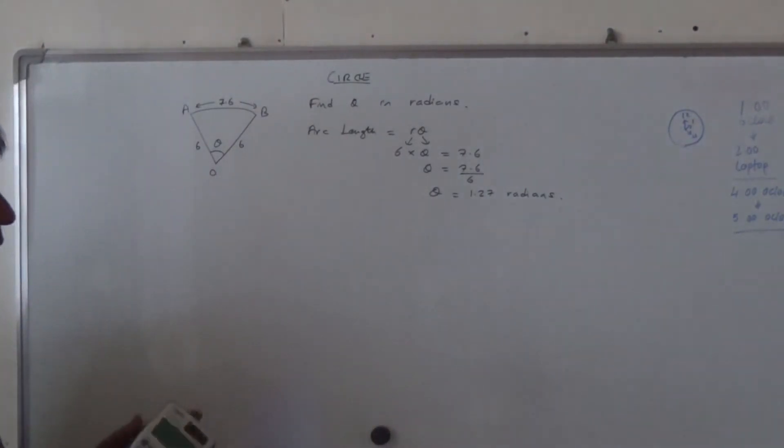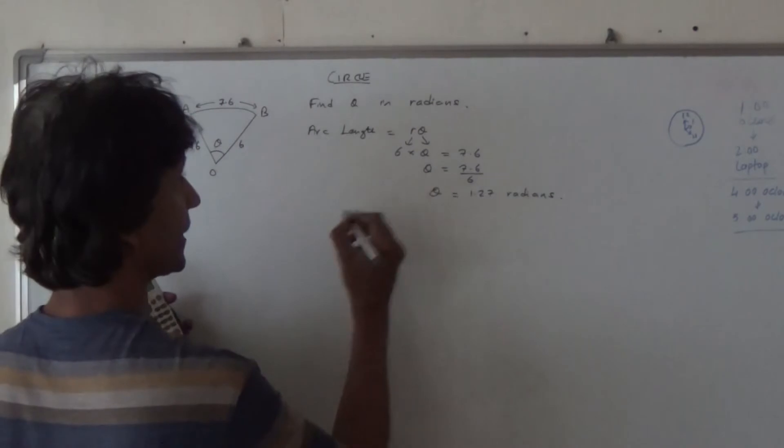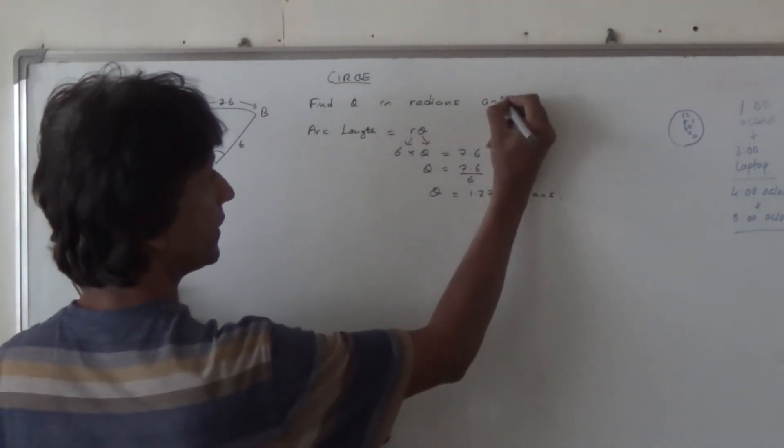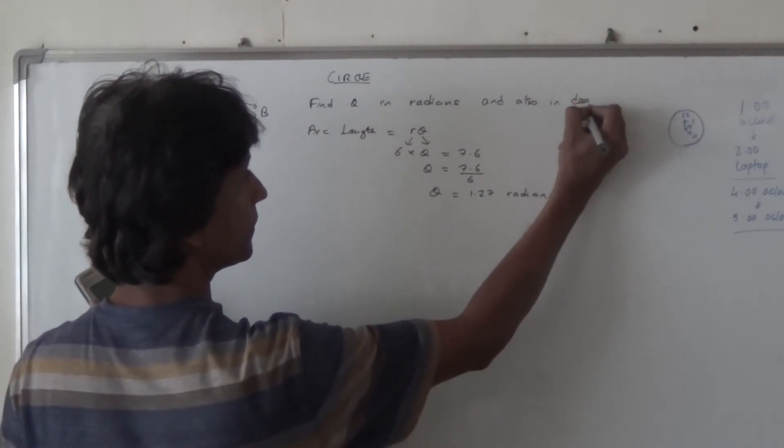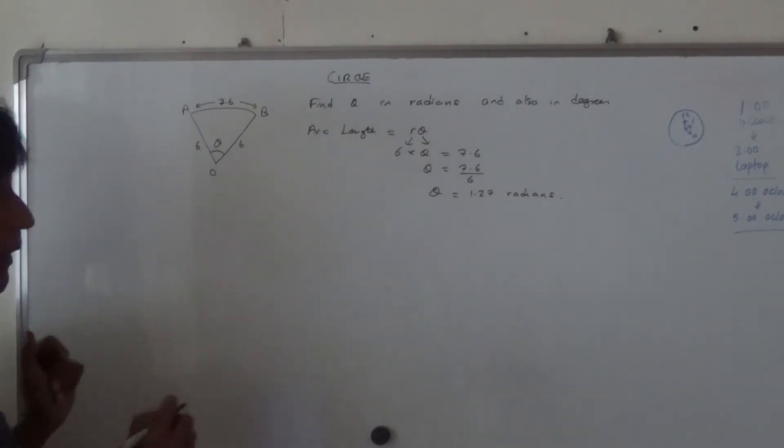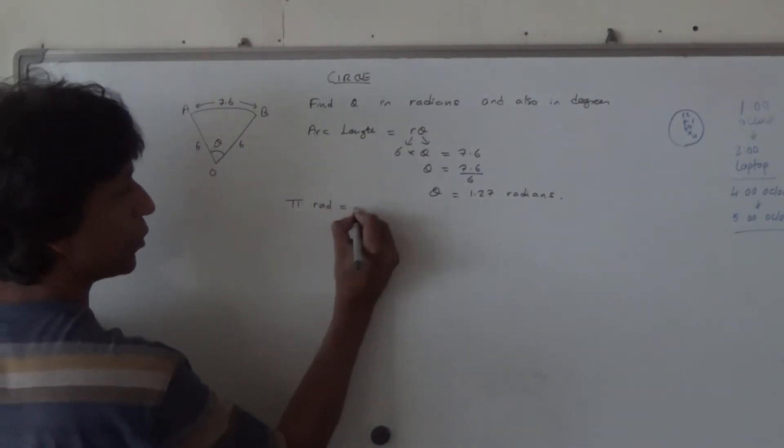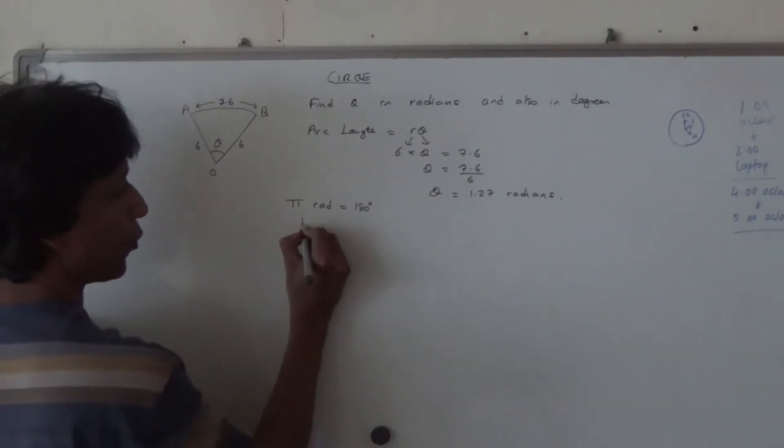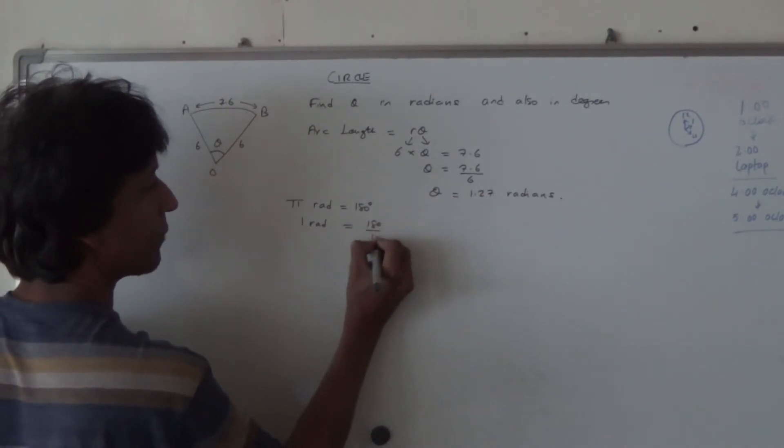And now suppose I tell you to convert theta into degrees. And then I say in radians and also in degrees. So to find that in degrees, not very difficult. You will remember I gave you the pi radian is always equal to 180 degrees. So therefore, 1 radian is equal to 180 divided by pi.